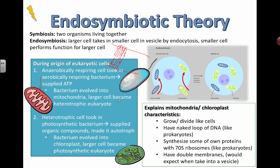It makes sense for something taken up by endocytosis to have a double membrane. When the cell membrane folds in and forms a vesicle enclosing the mitochondria, you end up with a double membrane. That's further evidence supporting the endosymbiotic theory and the origin of modern-day mitochondria and chloroplasts.